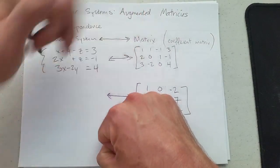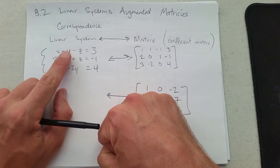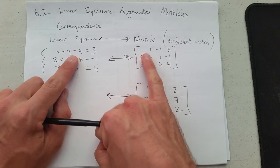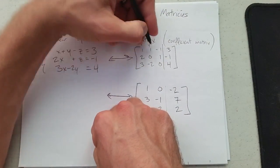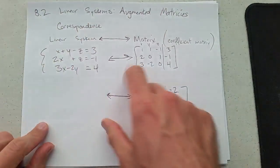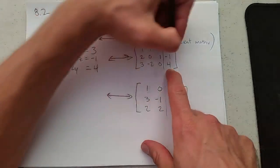If your variables are not in order, if this went z, x, y, I'd have to be very careful over here because this is the x, y, z column. I'm just labeling the columns, and what is the last column? The last column is constant.